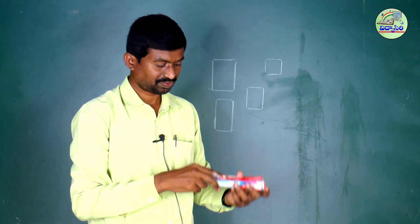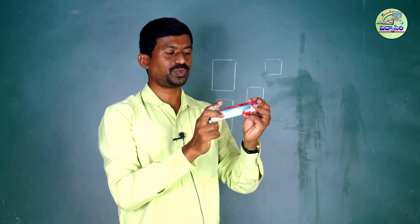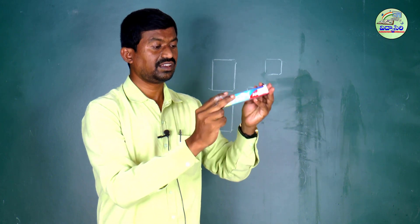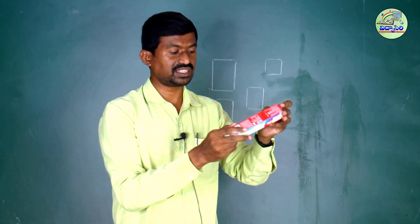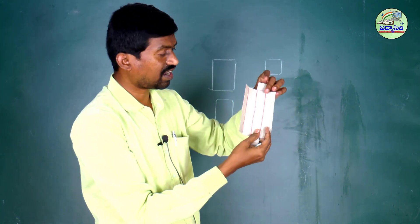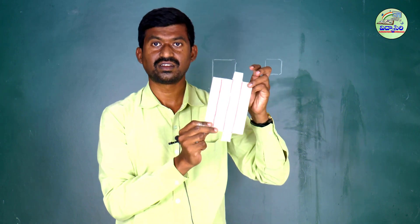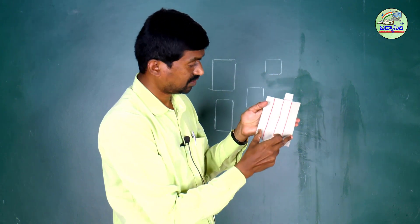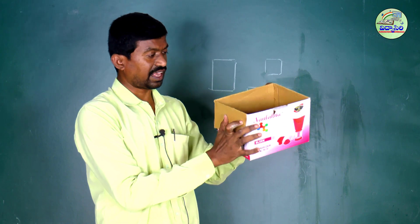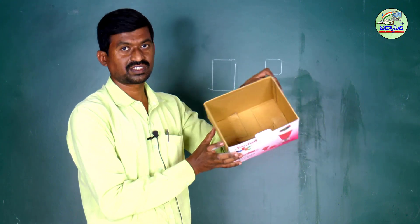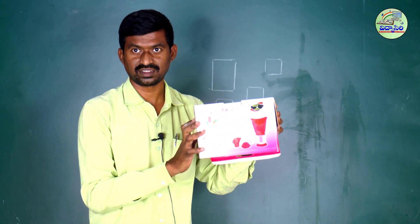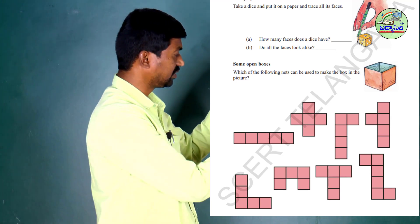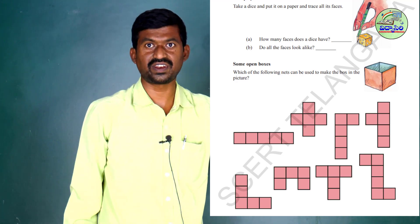Now I am taking a toothpaste box. See, I am opening this. I am folding like this — this is the net of the toothpaste box. I am taking the same open box like this. The textbook gives different nets.